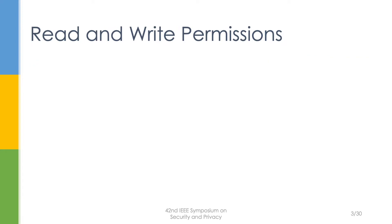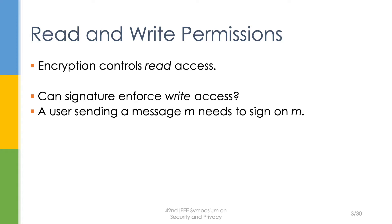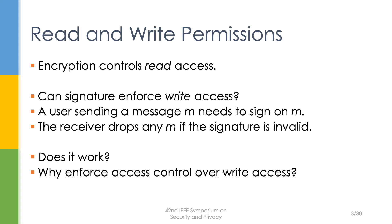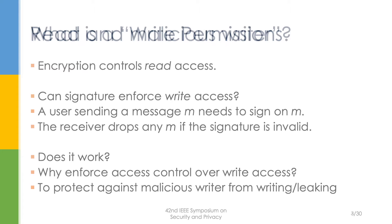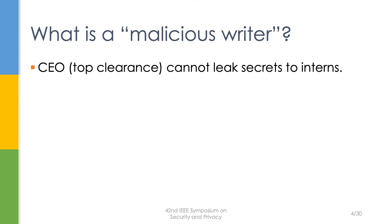To enforce read access, we can use encryption. How about write access? A natural thought is to use a signature. For example, a user sending a message M leads to signing on M, and the receiver will drop any M if the signature is invalid. Does this approach work? To answer this question, we first need to recall why we want to enforce access control over write access.